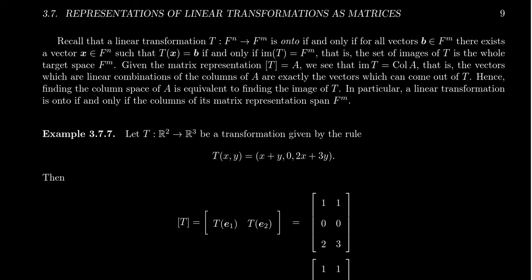A transformation being onto actually has something to do with linear systems being consistent. When we switch to the matrix representation, imagine the transformation T can be represented by the matrix A. The image of T — the vectors that come out of our machine — will coincide with the column space of A, those vectors which can be spanned as linear combinations of the columns of A. Therefore, to figure out whether a map is onto, we just need to show that the column space of A is Fᵐ — that is, the column space is M-dimensional. We need M pivot columns.